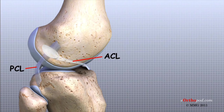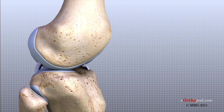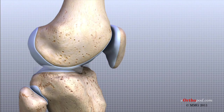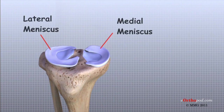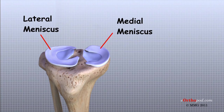Working together, the two cruciate ligaments control the back and forth motion of the knee. The MCL and the LCL prevent the knee from moving too far in the side-to-side direction. The ligaments, all taken together, are the most important structures controlling the stability of the knee. Two special types of ligaments, called menisci, sit between the femur and the tibia. These structures are sometimes referred to as the cartilages of the knee, but the menisci differ from the articular cartilage that covers the surface of the joint. The two menisci are important because they spread force over a larger area and help the ligaments with stability of the knee.